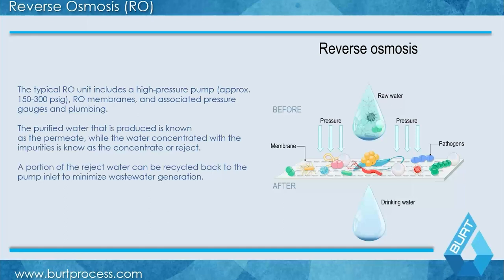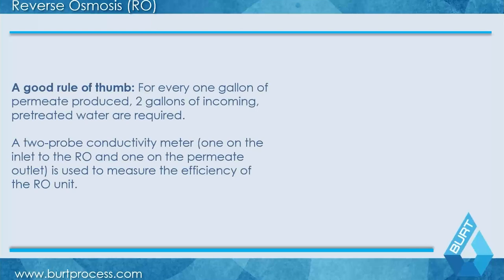Because of how an RO unit operates, you have to have a reject stream — solutes have to go somewhere. A fraction is recycled for water conservation and membrane treatment, and the rest is discharged as waste. The most optimized ROs will have maybe 20% reject, so if I put 5 GPM in, I get 4 GPM out and send 1 GPM to drain. An unoptimized RO is about 50% reject. On a small system that's manageable, but when you're looking at 50 GPM permeate, sending 20 to 30 GPM down the drain becomes very significant.